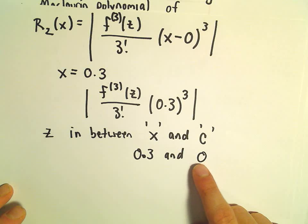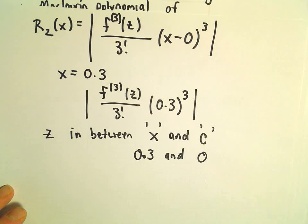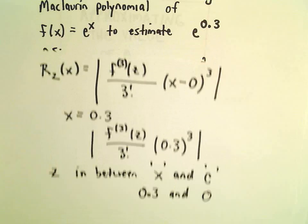Again, a Maclaurin polynomial is centered at 0 by definition. Okay, so let's see.